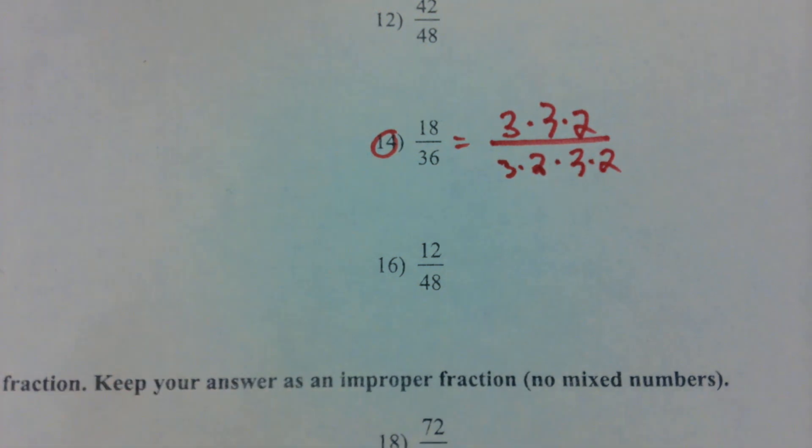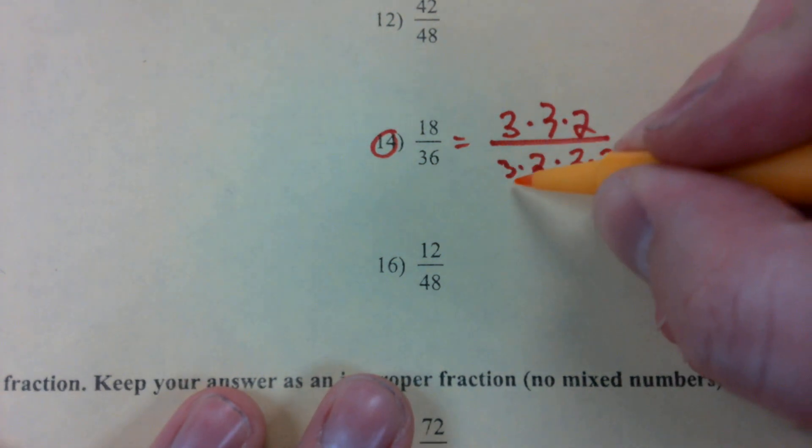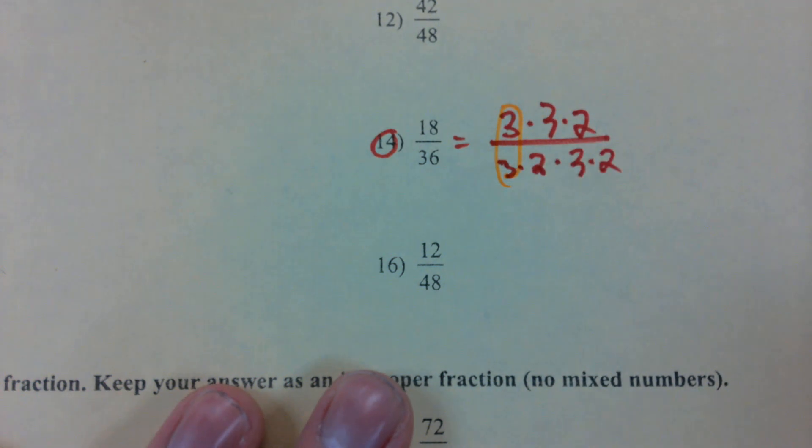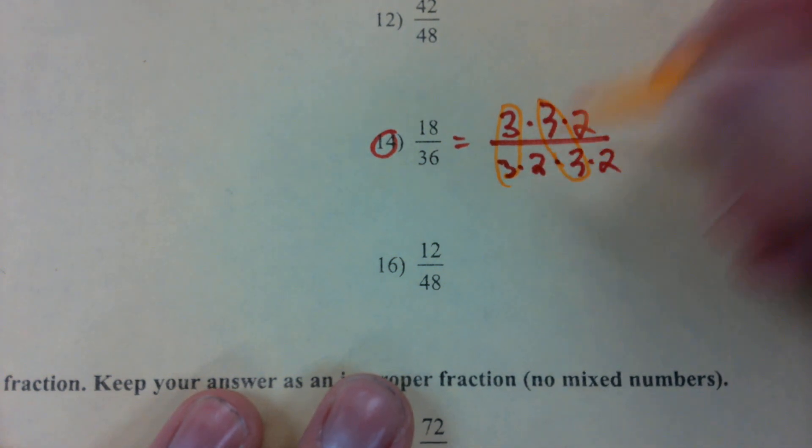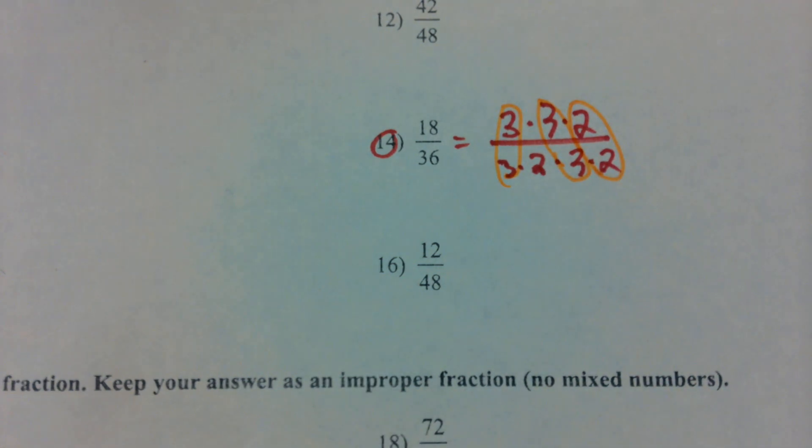Now what are we looking for? Common factors. Exactly. We're looking for common factors. I see a pair of threes right here. I see another pair of threes right there. And I see a pair of twos. Now this is where we have to pay extra special attention. I see that all I have left is this two, right? So is my answer just going to be two? No, it's not. What am I missing? The one. Where am I putting the one? On the top. Exactly.